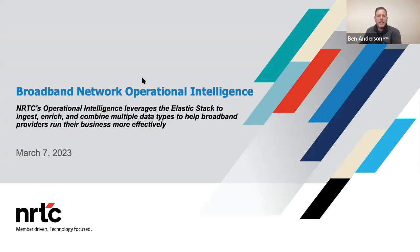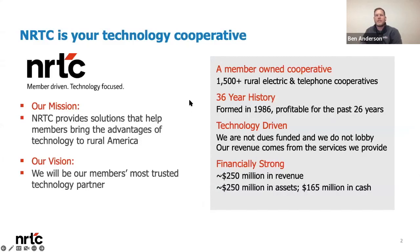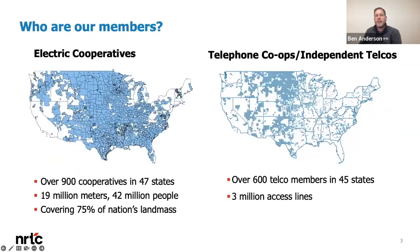NRTC stands for the National Rural Telecommunications Cooperative. We're a member-owned cooperative made up of over 1,500 rural electric and telephone cooperatives. Our mission is to provide solutions that help our members bring the advantages of technology to rural America, and our vision is to be our members' most trusted technology partner. Our electric cooperative members provide services to 75% of the continental U.S. and 42 million people, and our telco members provide coverage to 45 states and 3 million access lines.